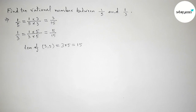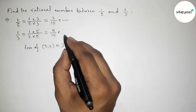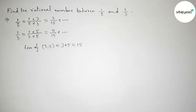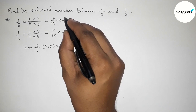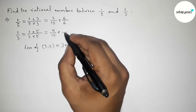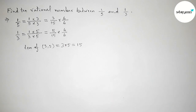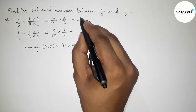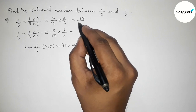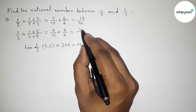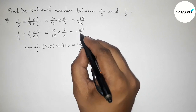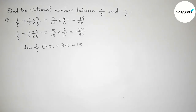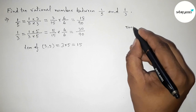Next, we need to find 10 rational numbers, so we multiply both fractions again — this time by 6 over 6. So 3/15 multiplied by 6/6 gives 18/90, and 5/15 multiplied by 6/6 gives 30/90.